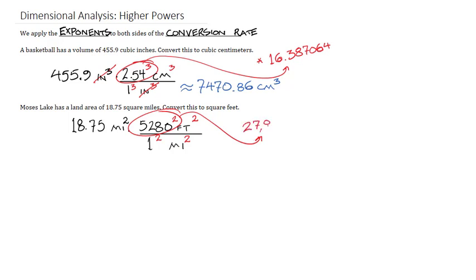And so now we can take 18.75 and multiply by 27,878,400, which, as big a number as that is, is just a conversion between miles and feet. And once again, our square miles will divide right out. And while we're dealing with very large numbers here, the actual math itself has not actually changed that much.